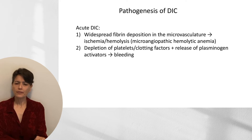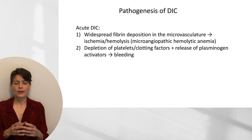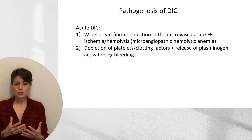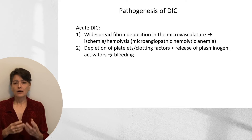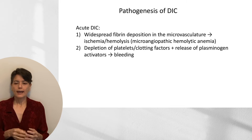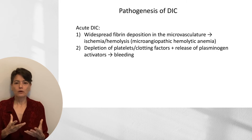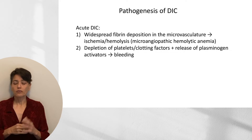Now let's focus on the pathogenesis of acute DIC. We have release of some procoagulant into the circulation, resulting in widespread fibrin deposition in the microvasculature, causing ischemia downstream. One consequence of this widespread fibrin deposition is the formation of a fibrin mesh. As red blood cells try to squeeze through that mesh, they can be shattered into schistocytes, resulting in a microangiopathic hemolytic anemia.